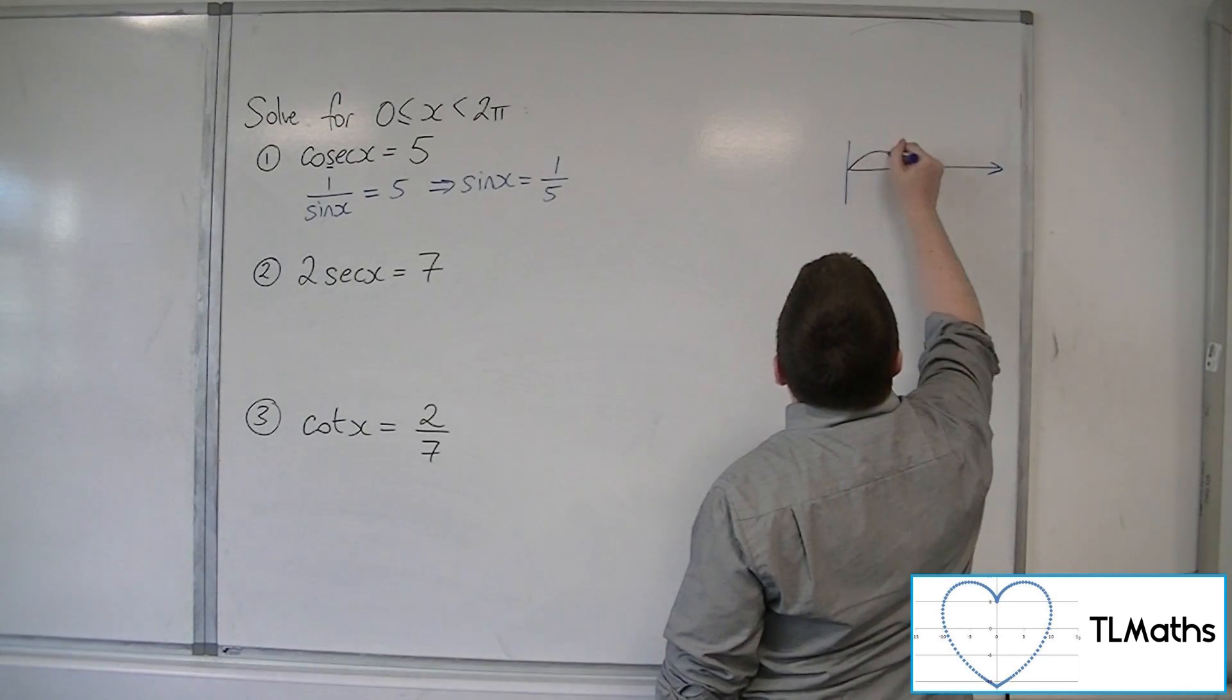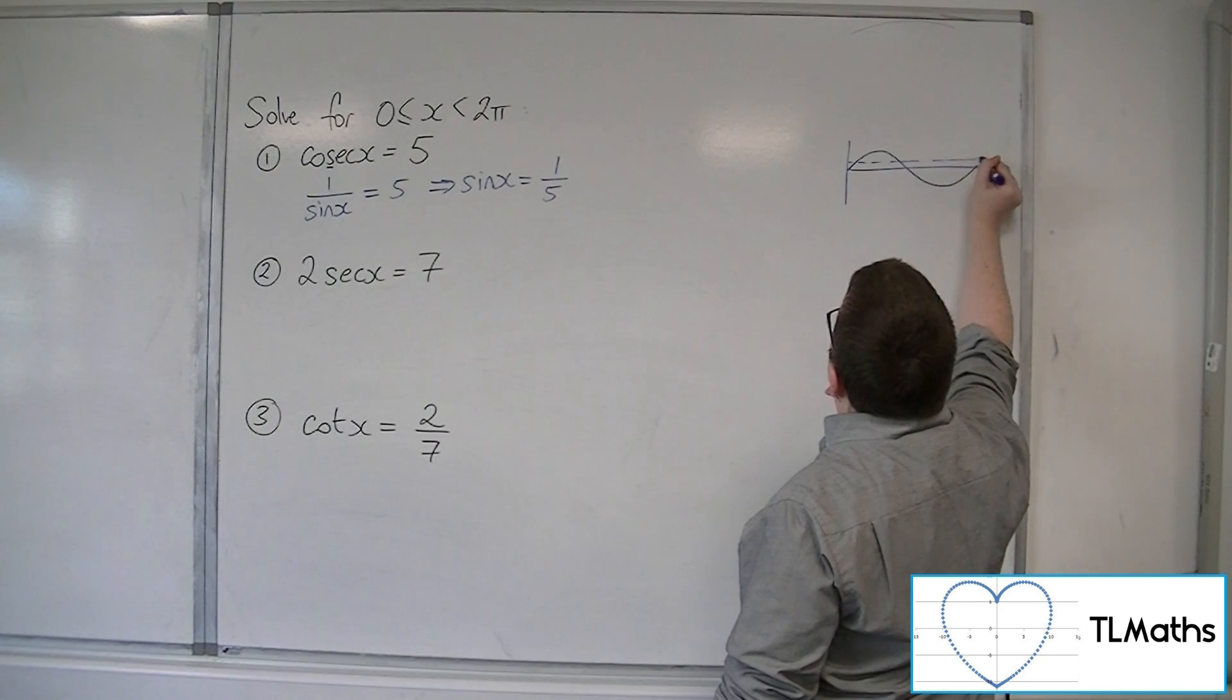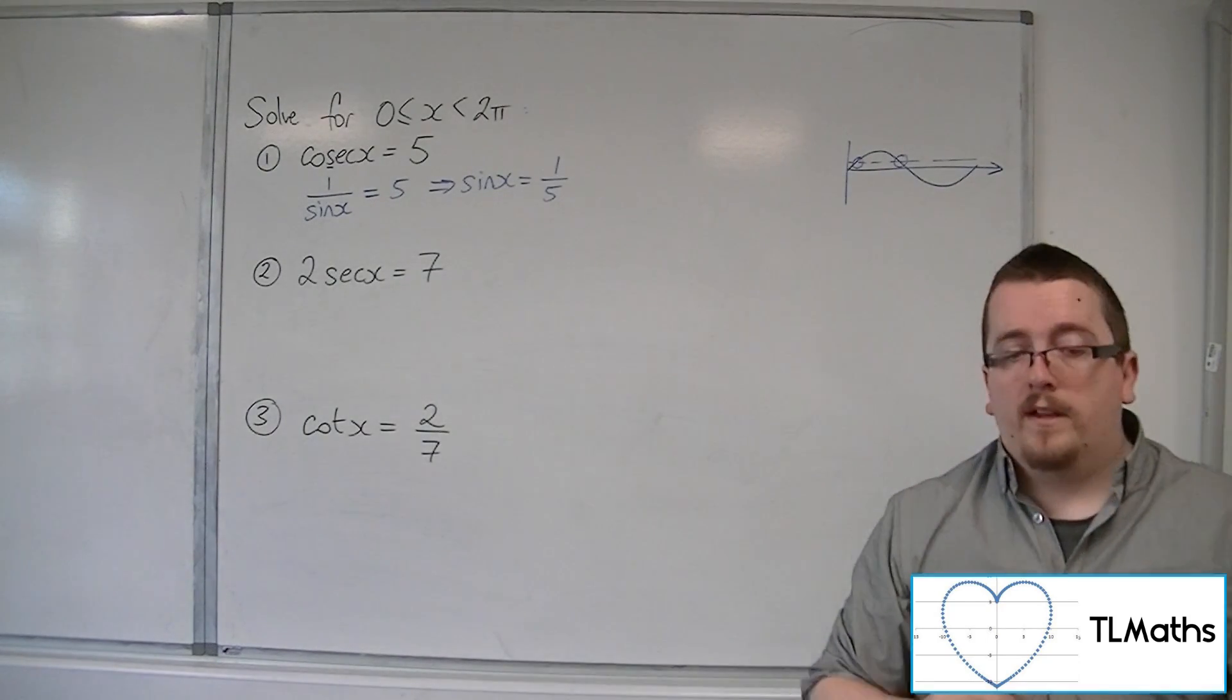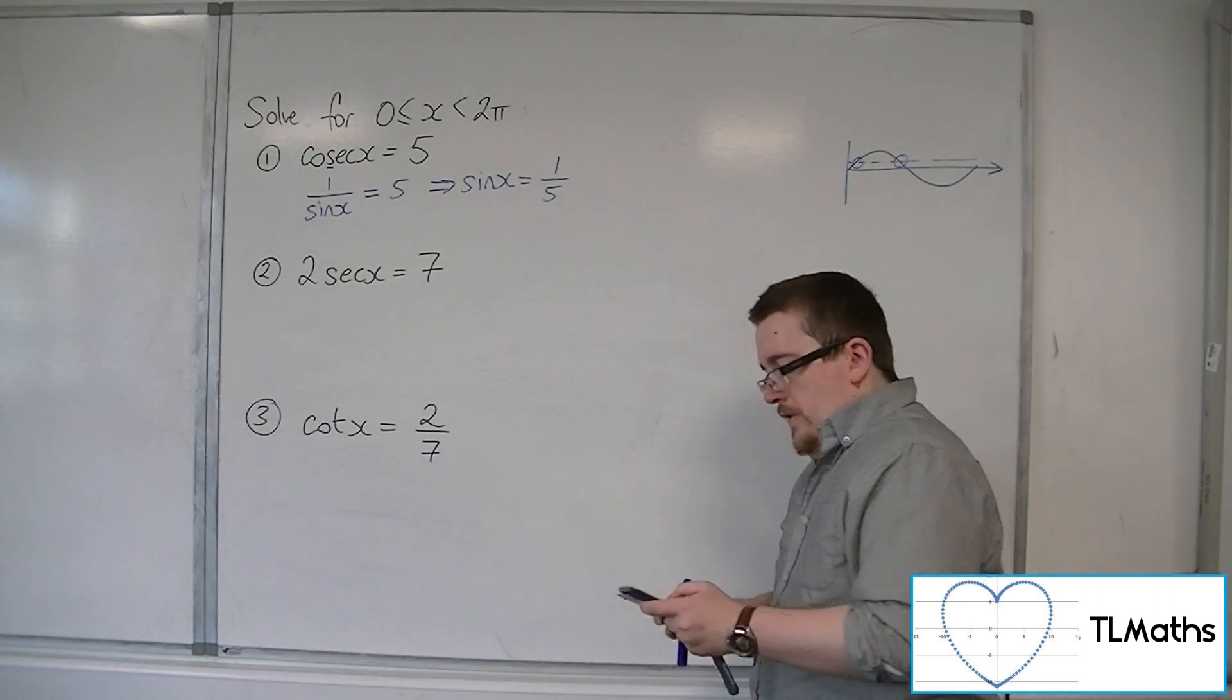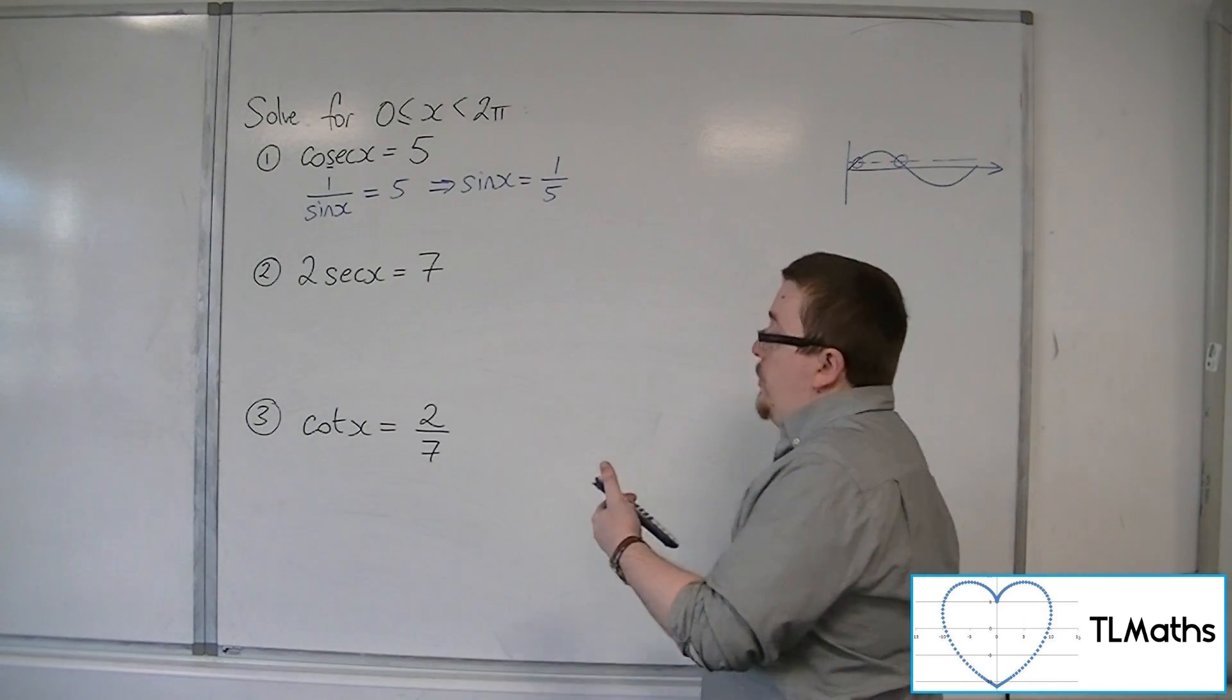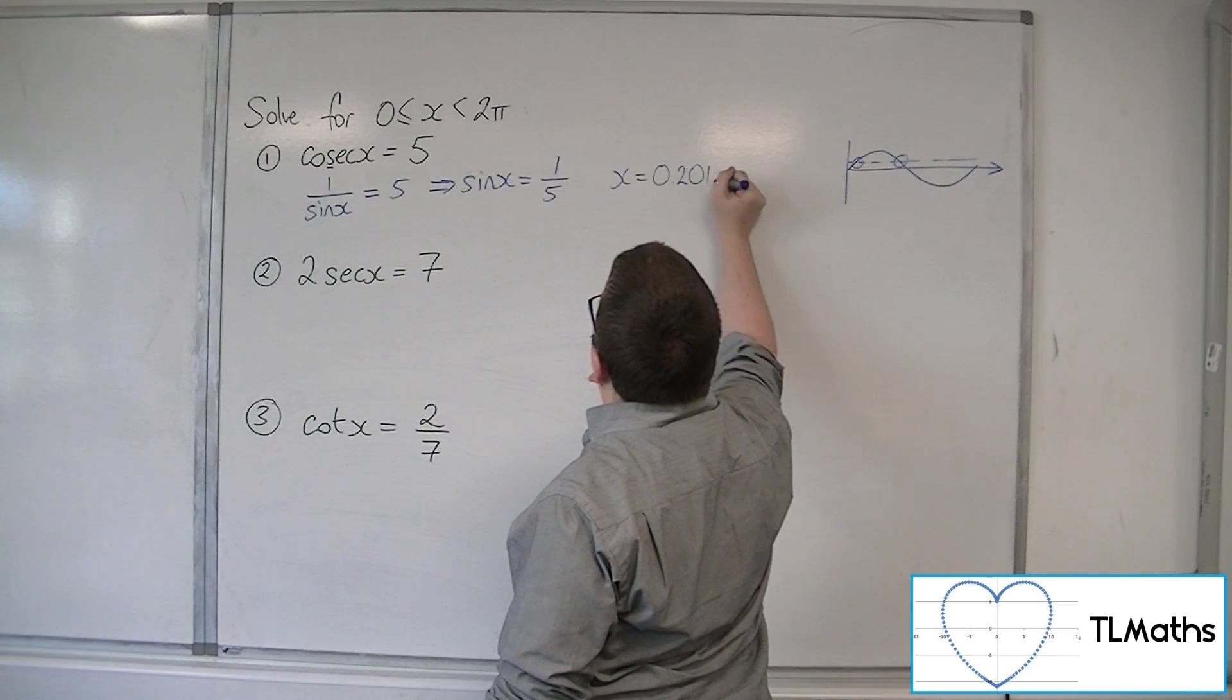So here's sine between 0 and 2π, 1 fifth. So we're looking at two solutions here. So we get our calculator. So inverse sine of 1 fifth is 0.201. So x is equal to 0.201 to 3 decimal places.